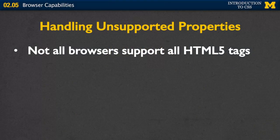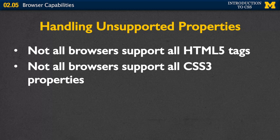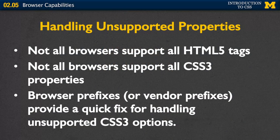One of the other things we want to talk about is handling what we call unsupported properties. We know that all browsers don't support all the HTML5 tags. In the same way, not all browsers support all the CSS3 properties. There are some properties that look really cool on some browsers but aren't handled by default in others. But there is a way around that in many cases — the browsers are offering prefixes. Sometimes they're called browser prefixes, sometimes vendor prefixes, but it's a really quick fix for handling all the unsupported options you might come across.